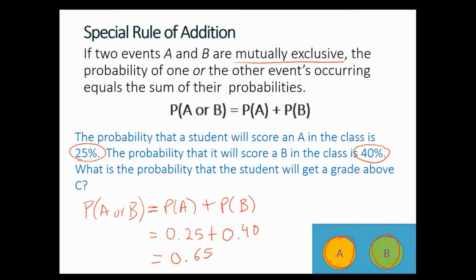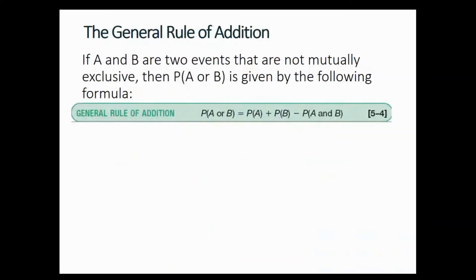P(A) = 0.25, P(B) = 0.40, so this equals 0.65. Remember, probability is a number between 0 and 1 — nothing above 1, nothing below 0. Now let's see the general rule of addition, which is used when events are not mutually exclusive, meaning they have a joint.